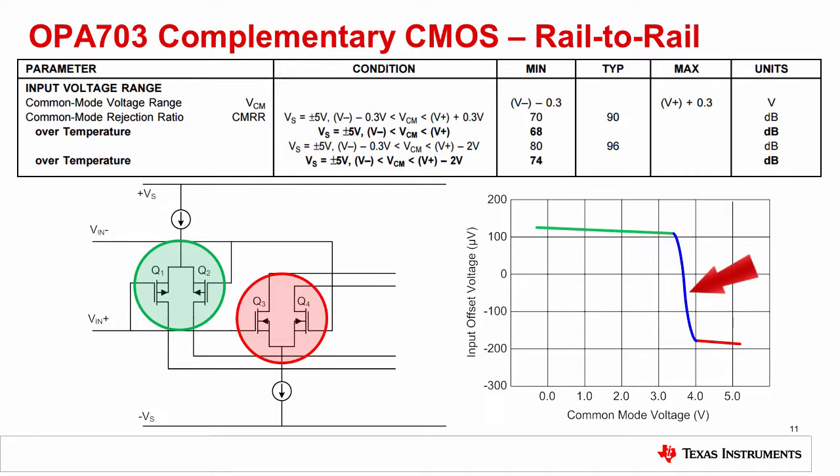When the common mode transitions past 3.5 volts, the offset transitions from 100 microvolts to minus 200 microvolts. This abrupt transition in offset can appear as distortion in the input signal, known as crossover distortion, since it occurs during the crossover from one input pair to the other.